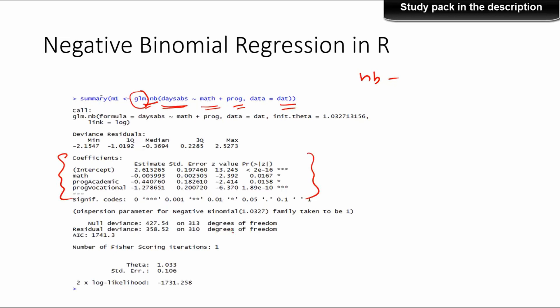We also need to look at diagnostic statistics like deviance, which should be as minimum as possible, and the AIC (Akaike Information Criteria), which also should be as low as possible. The independent variable maths has an estimate of negative 0.005, meaning somebody scoring high on mathematics is less likely to be absent. It is statistically significant with a p-value less than 0.05, at the 95% confidence level.